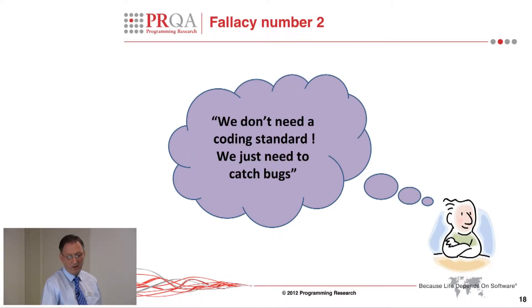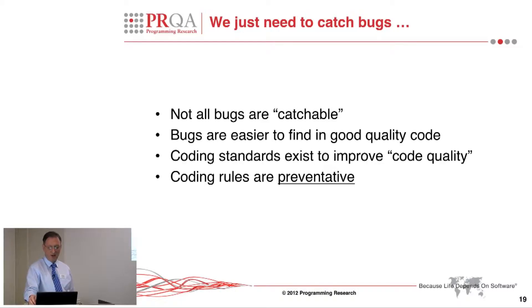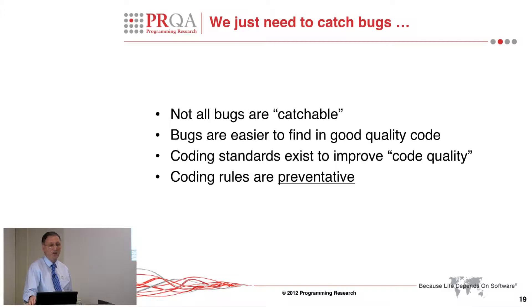The same fallacy, really. We don't need a coding standard — we just need to catch bugs. The problem is that you can't catch all bugs; not all bugs are catchable. And this is one of the fundamental problems with the C language, really. The point that's already been made is that bugs are much easier to find in good quality code than they are in bad quality code, which is where coding standards come in.